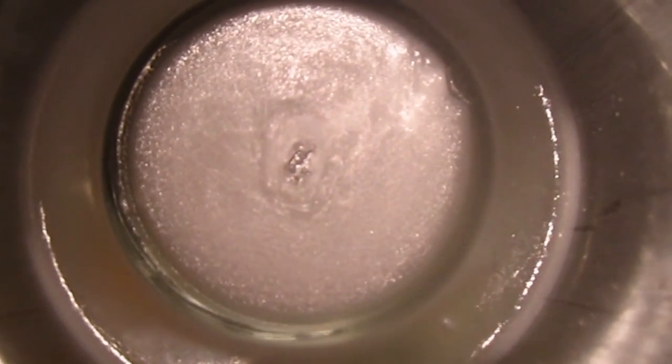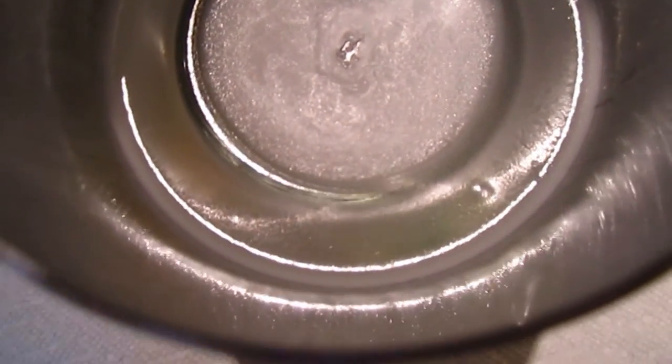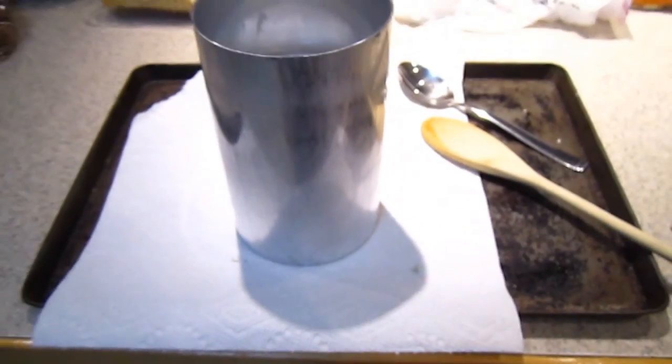The sealing spray should allow you to remove the paraffin candle easily, but if not, heat up a warm dishcloth and wrap it around the mold, periodically trying to work the candle out of the mold.